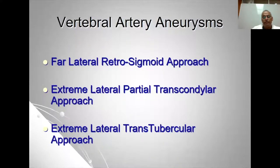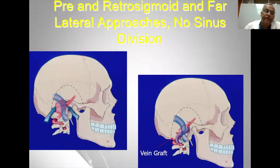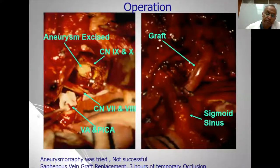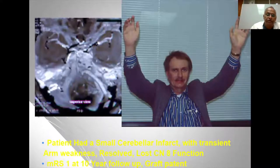For vertebral artery aneurysms, depending on location, one may use a far lateral or transsigmoid approach, the extreme lateral partial transcondylar approach, or the transtubercular approach. Another case involves a giant partially thrombosed vertebral aneurysm treated with a combination of far lateral and presigmoid approaches plus a saphenous vein graft replacement, after coil embolization was unsuccessful. The patient did well but had a small cerebellar infarct.